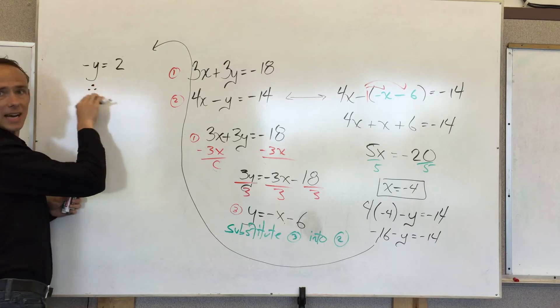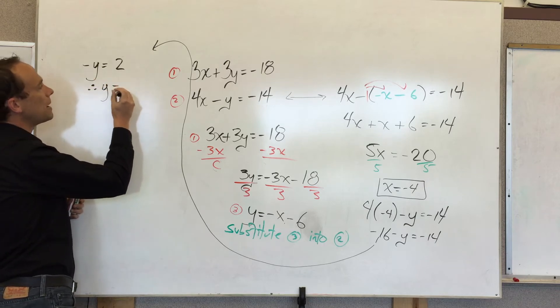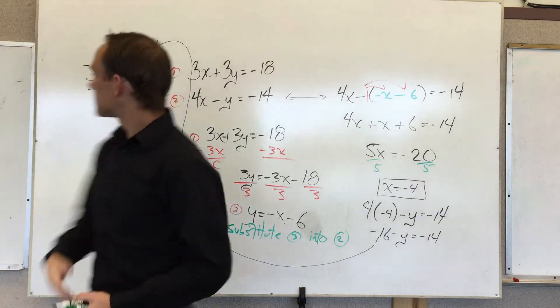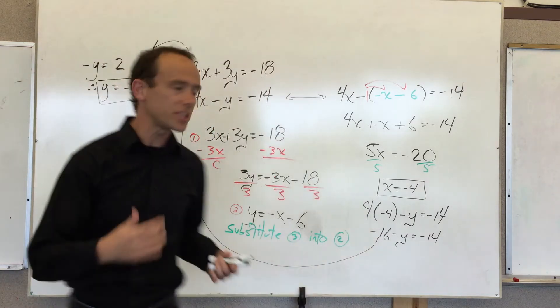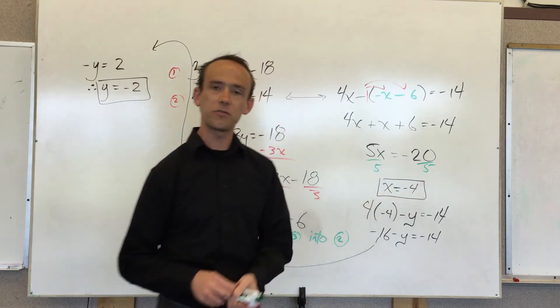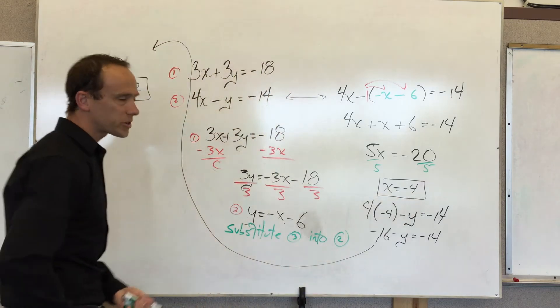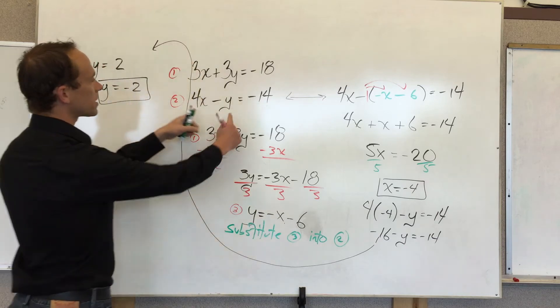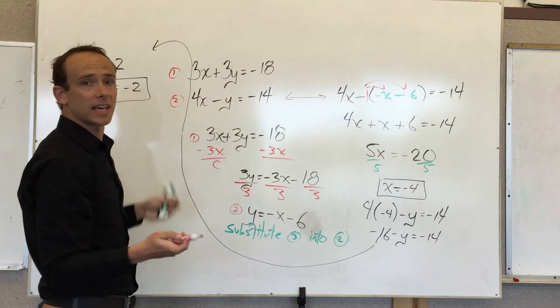So this gives me negative y is equal to 2 because I added 16, and negative 14 plus 16 is 2. Therefore, I love the three little dots symbolizing therefore, y must equal negative 2. Ta-da! So the solution to the equation is y equals negative 2 and x equals negative 4. You can check that. You can check it.